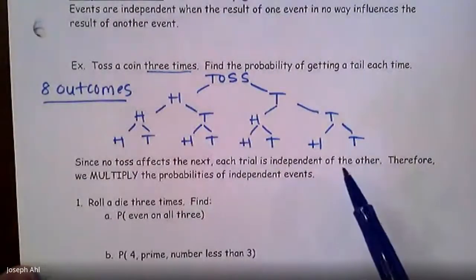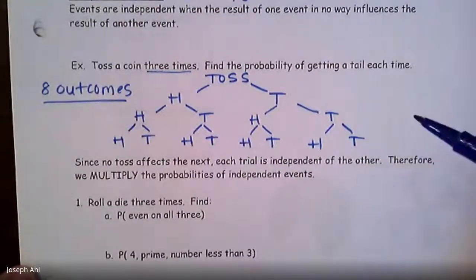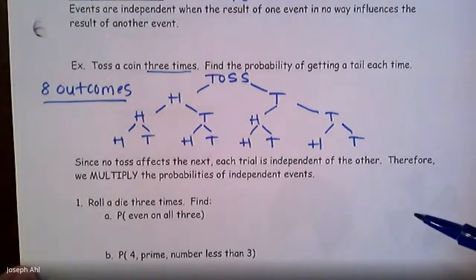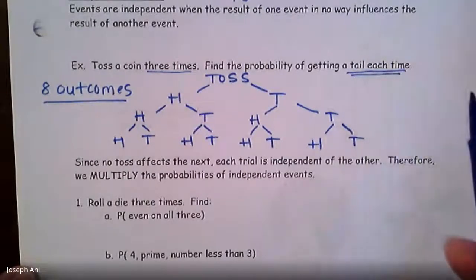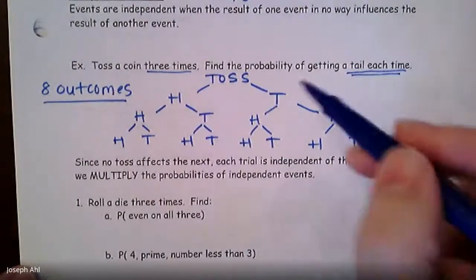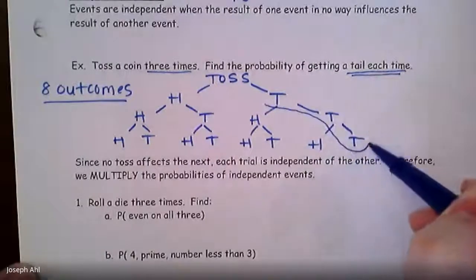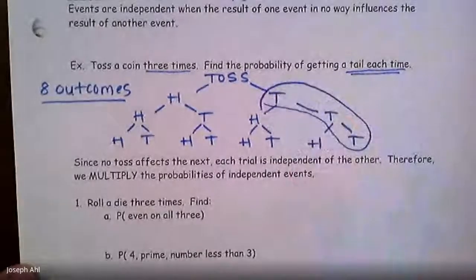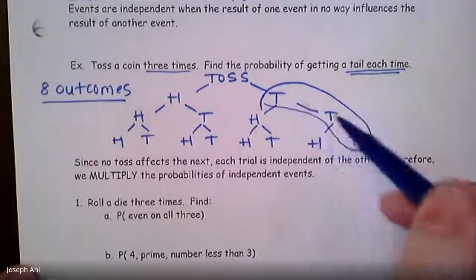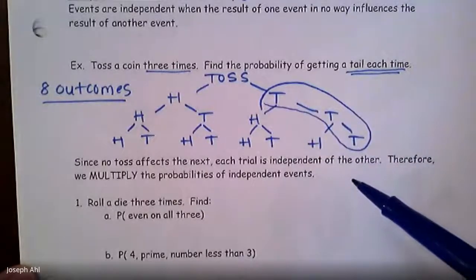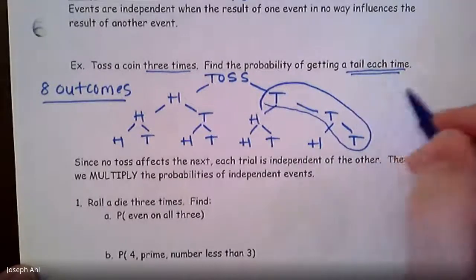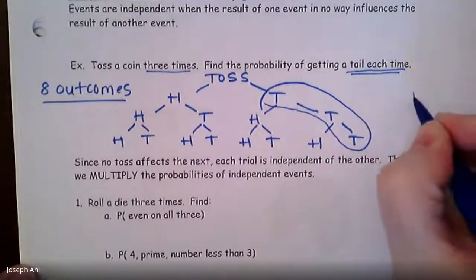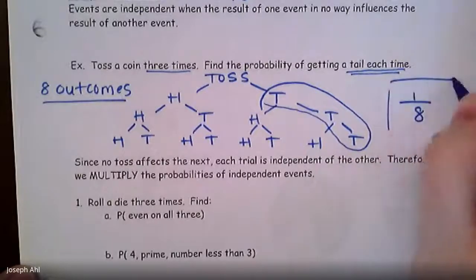When I see there are eight outcomes total, I want to look at just the outcome of getting a tail each time. There's only one case where you get tail, tail, tail — it happens to be this last branch of the tree diagram. No other branch would have tail, tail, tail other than that one. Since this is the only path you can take to get tail, tail, tail, the probability of getting tails each time is one out of eight.